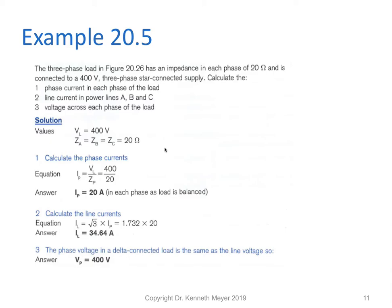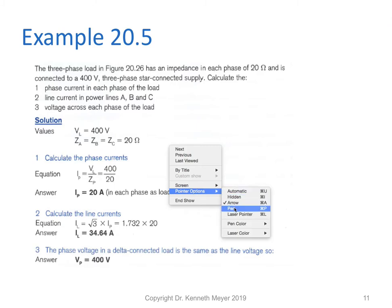Let's do a quick calculation to work out how this works mathematically. We want to find the phase current in each of the loads, the line current A, B and C, and the voltage across each of the loads. We learned the formulas we needed for this in the last lesson. We have 400 volts and each of our impedances Z_ab and Z_c are 20 ohms.